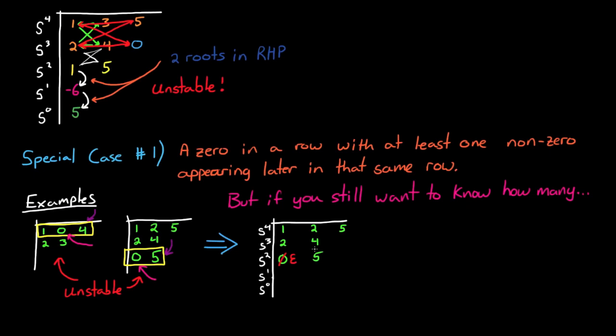So when you come across a 0 followed by a non-zero like we see in this third row, you replace that 0 with the Greek symbol epsilon. Complete the array using epsilon in its place, and once you finish completing the table, you can just take the limit as epsilon goes to 0.